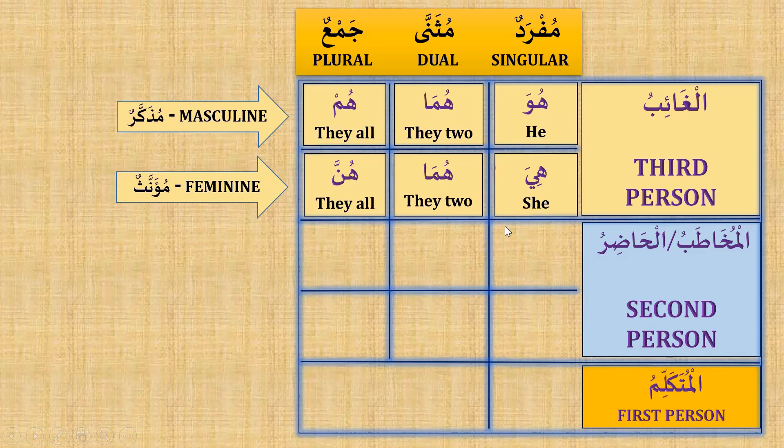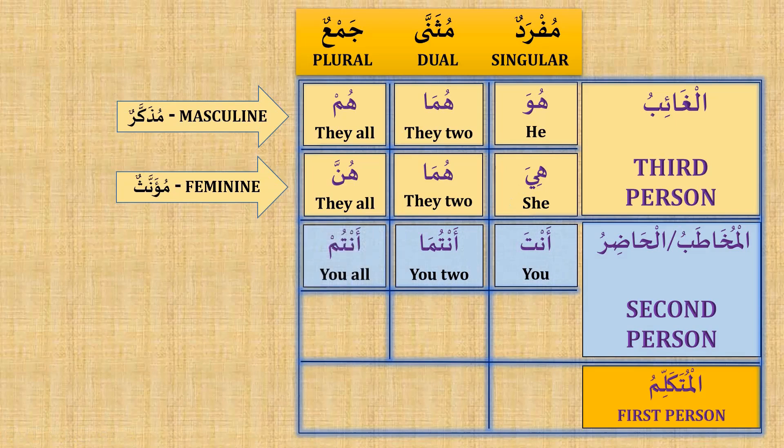Now second person. Anta — you; antuma — you two; antum — you all. These are mudhakkar, masculine.